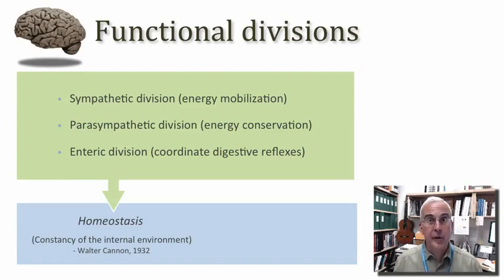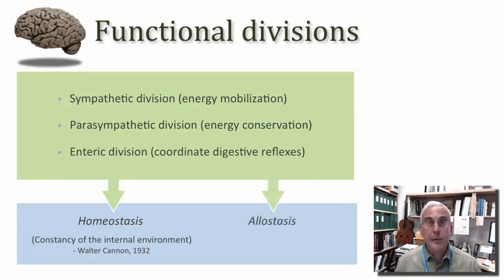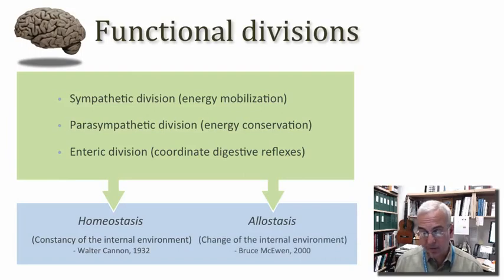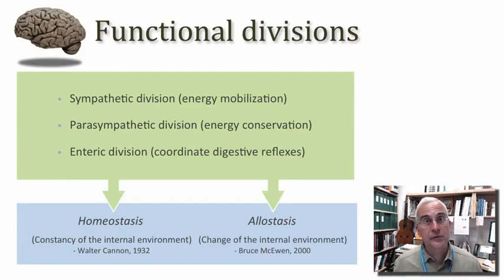Homeostasis is what our bodies are about most of the time. But we couldn't survive if this were the only mode of action. There are times when, in order to restore proper balance, we must push the body into emergency action. This concept is captured by the term allostasis, coined by neuroscientist Bruce McEwen, referring to imposing a change of the internal environment so that we can eventually cycle back and reestablish homeostasis.